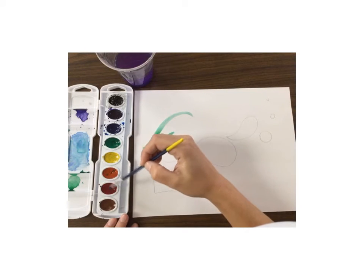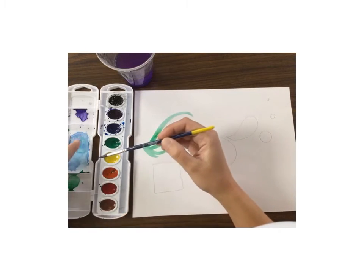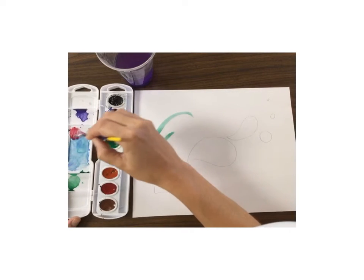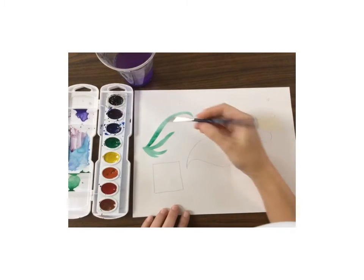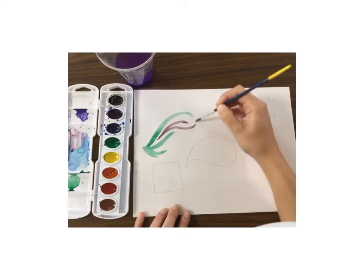If you'd like to, you can also mix colors in this tray that's attached to it. Here I've got some red and I'm going to put it on this blue part to see what I can make. I just made purple, that's pretty cool. Now you can paint with the colors you make.